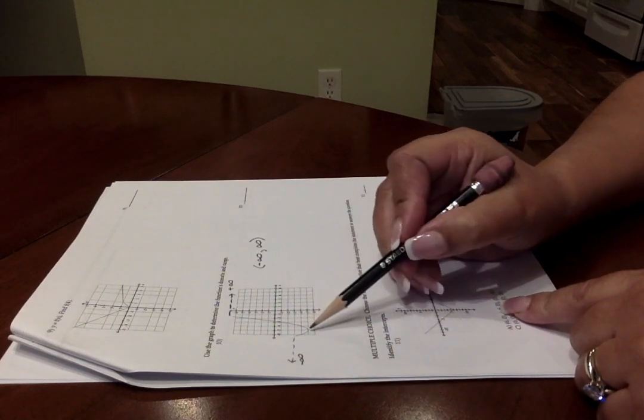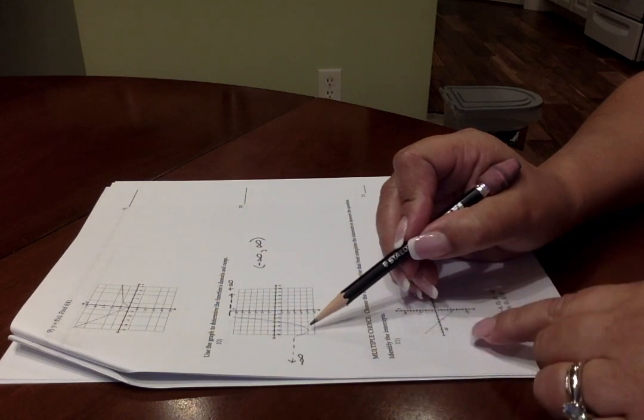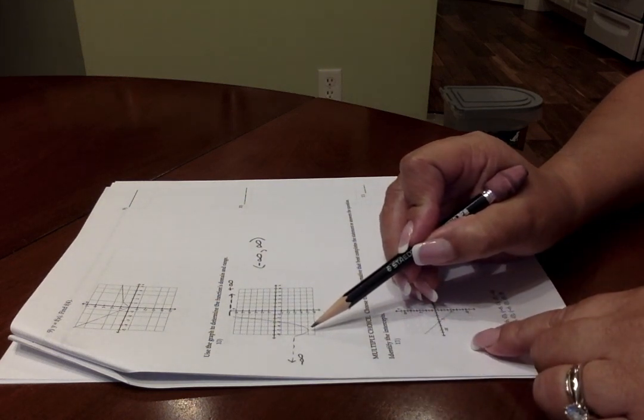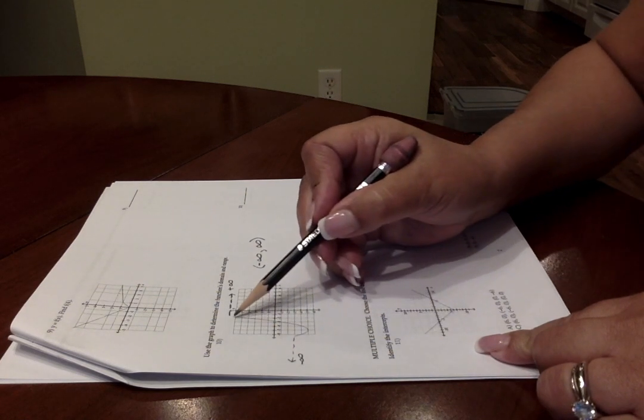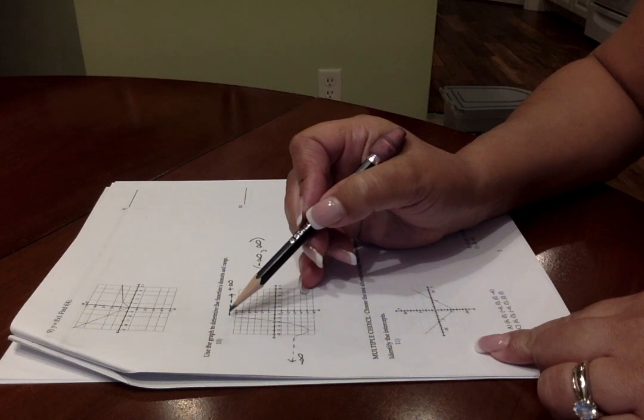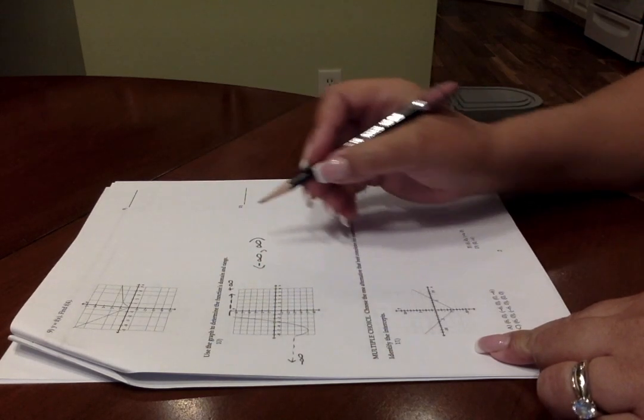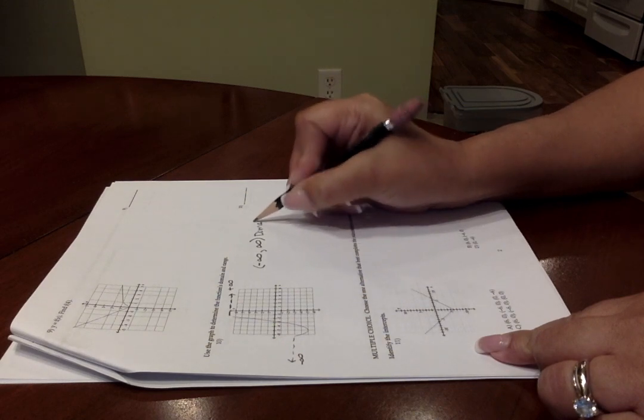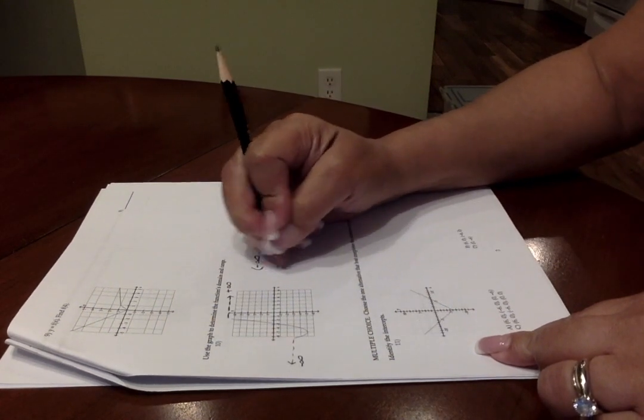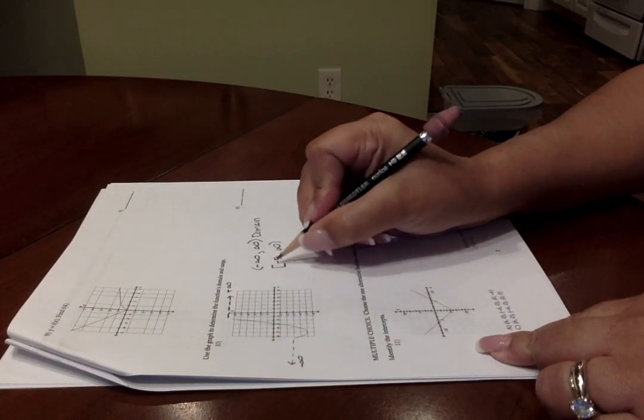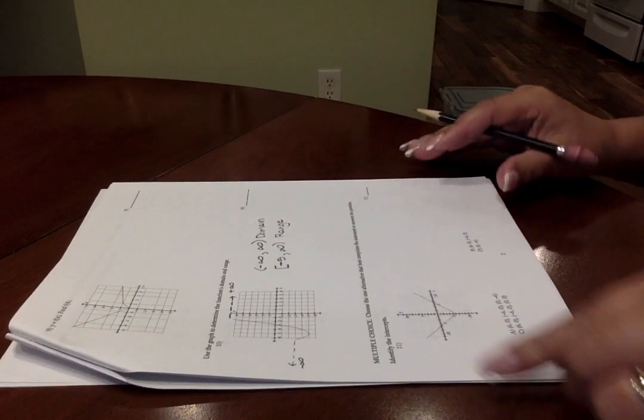Going on to look at the range, those are the Y values, which really means how low and how high does the graph go. At the very bottom of this parabola in number 10, it dips down to negative 5, and then how high it goes would be all the way up to positive infinity with respect to the Y values. This negative 5 should have a bracket around it because that is actually a solid point on the graph. So that is the domain and the range.